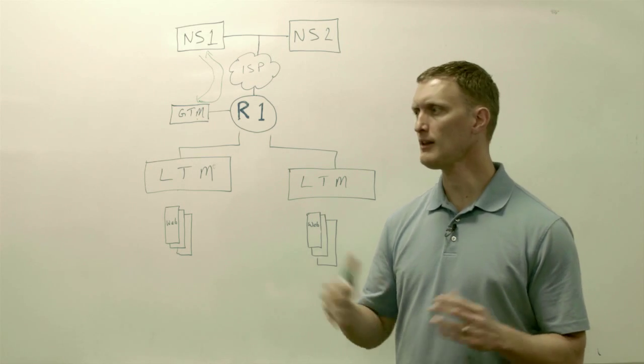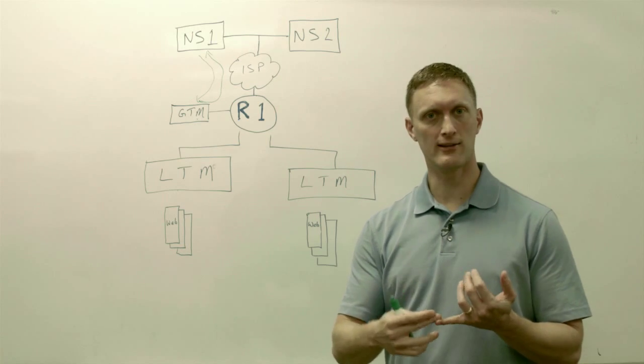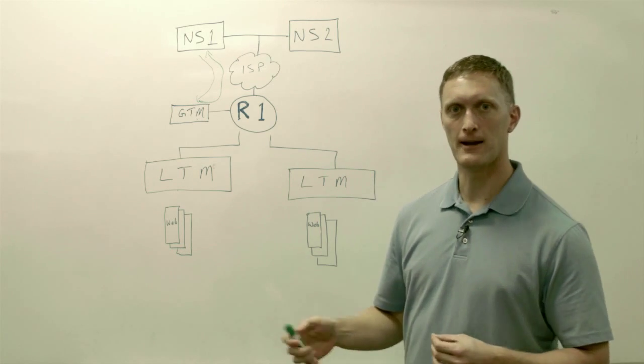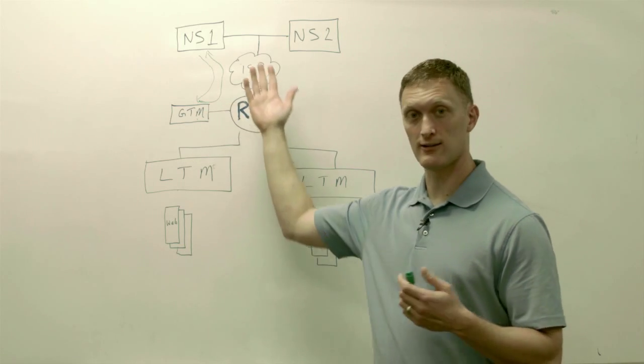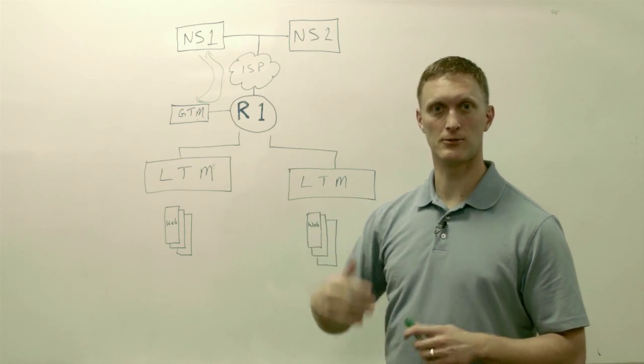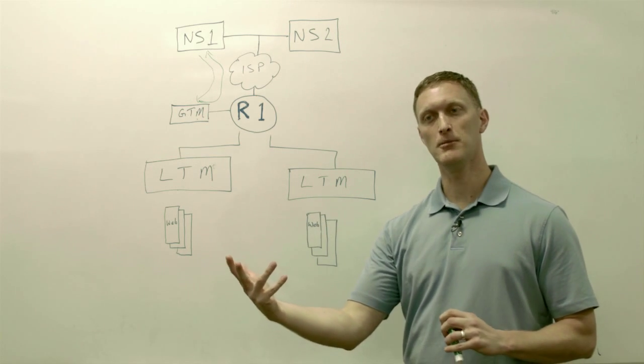That's what a path check does. A couple things you could use for path check monitors would be gateway ICMP or ICMP monitors on the GTM. If it gets a response back, then it knows that that path is available.